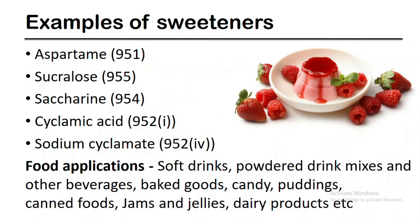Aspartame, sucralose, saccharine, cyclamic acid, and sodium cyclamate are some examples of sweeteners used in the food industry. Soft drinks, baked goods, candies, puddings, canned foods, jams, and jellies are products sweetened with artificial sweeteners.